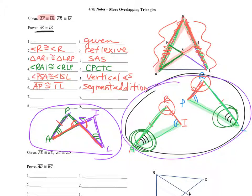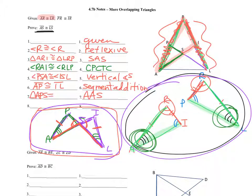Now that we know that, that's this piece congruent to that piece. Look at your two triangles — what do you see? AAS. So we can say the triangles are congruent by AAS: triangle APS is congruent to triangle LIS by AAS, which means the parts will be congruent. AS will be congruent to LS by CPCTC.